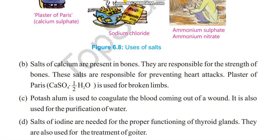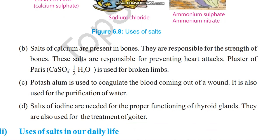Potash alum is used to coagulate the blood coming out of a wound. It is also used for the purification of water. Salts of iodine are needed for the proper functioning of thyroid glands, and they are also used for the treatment of goiter.